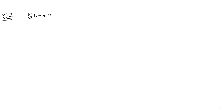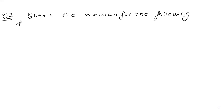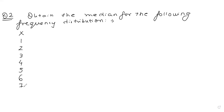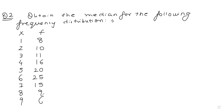Let's look at the second numerical. Obtain the median for the following frequency distribution. We are given the variable X taking values 1, 2, 3, 4, 5, 6, 7, 8, 9, and we are also given the frequencies: 8, 10, 11, 16, 20, 25, 15, 9, 6. It's a discrete frequency distribution. The data is already in ascending order, starting from the lowest value 1 to the highest value 9.